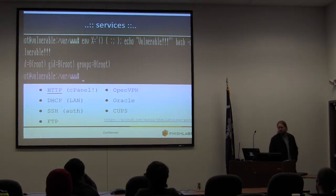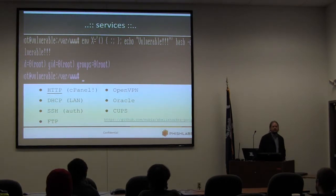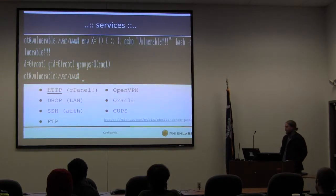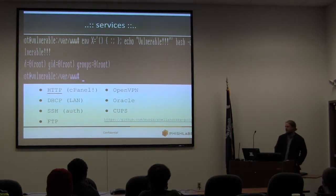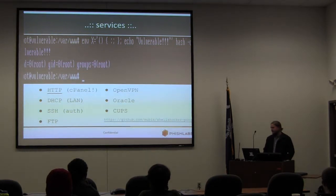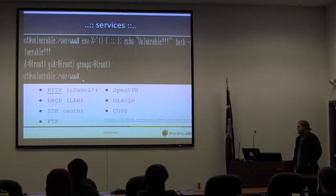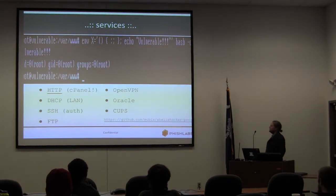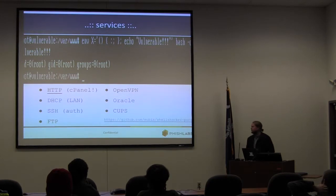What remote services are you able to exploit Shellshock against as an attacker? For starters, the biggest one would be HTTP, which I'll show in an exploit demo — especially cPanel. cPanel has several CGI or common gateway scripts that are susceptible through environment variable tampering if a bash shell is not patched. DHCP on the LAN — even OS X, your Mac computers — were susceptible to DHCP exploitation, but thankfully only on the local area network. Secure shell, luckily only through authenticated sessions. File transfer protocol, OpenVPN, Oracle databases, and even common Unix print services.